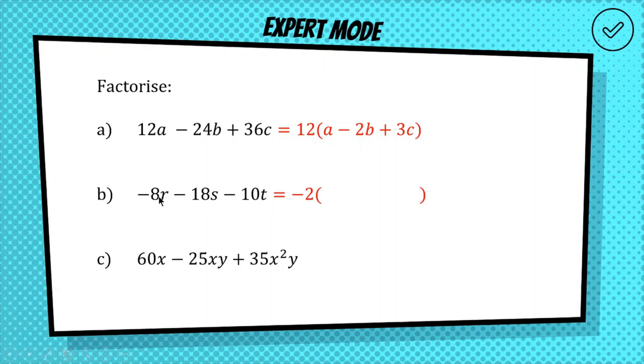So 8 divided by 2 is going to be 4, so we get 4r. If we divide these 2 by 2, we get 9s and 5t. All right, and they're all positive because when we multiply them by negative 2, they're all going to turn negative and give us the original question.